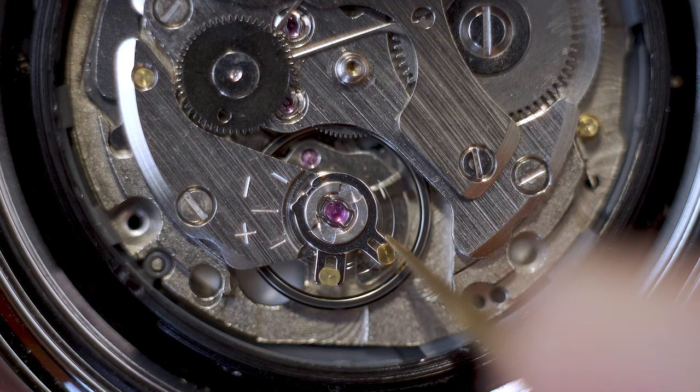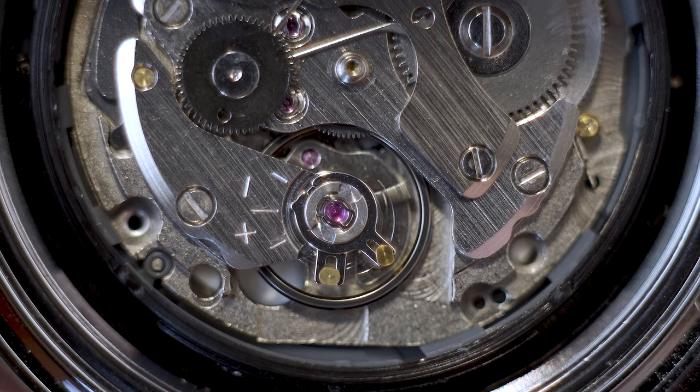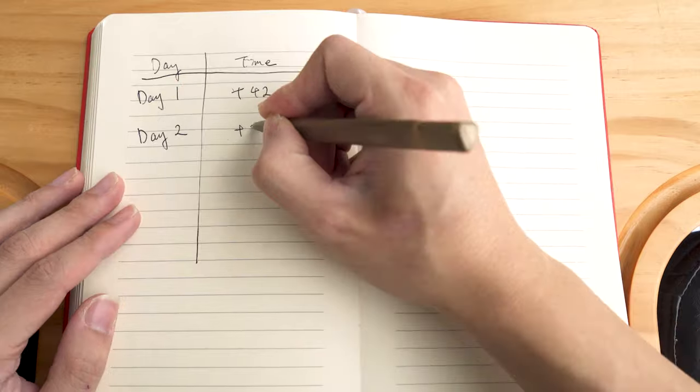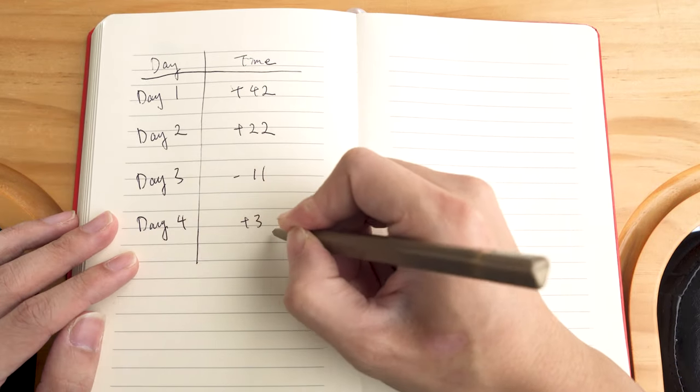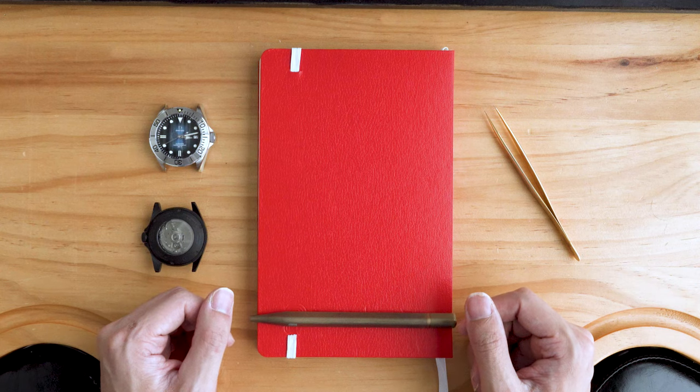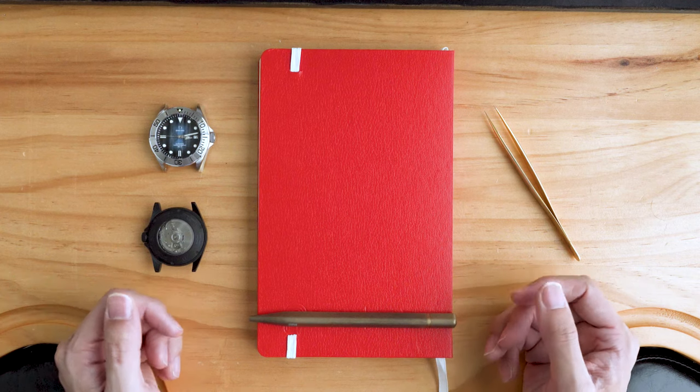You can adjust the regulator according to your finding, and remember to make only tiny adjustments at a time. Repeat the process again until you've reached an accuracy you are satisfied with. This can take considerably more time, but it'll work eventually if you have the patience.